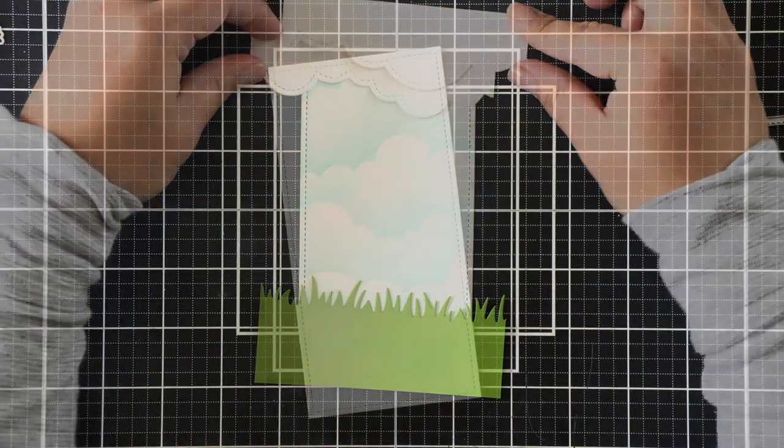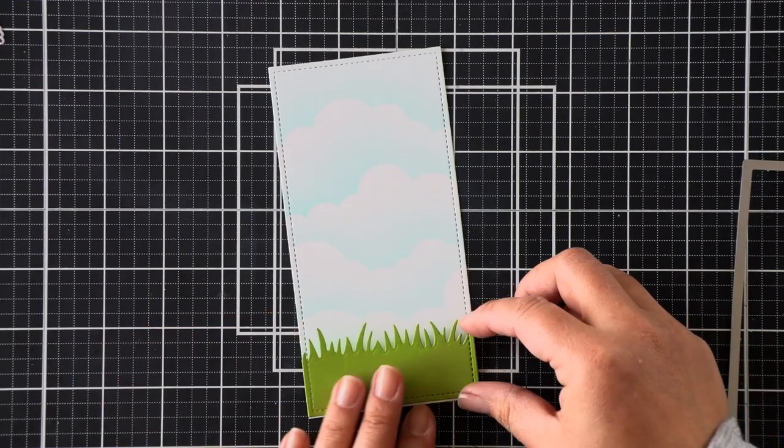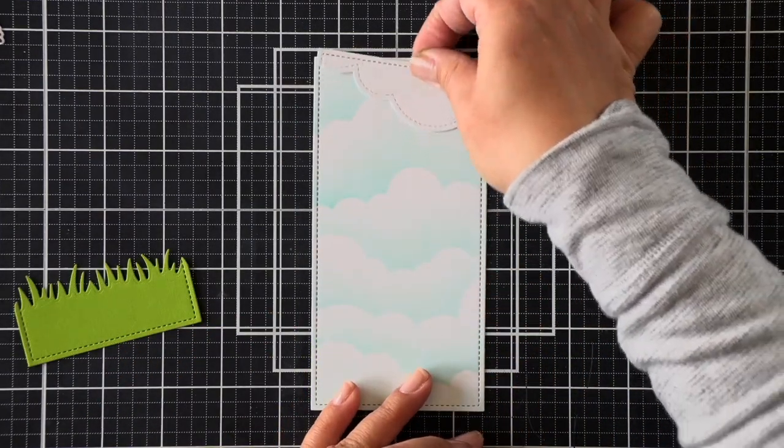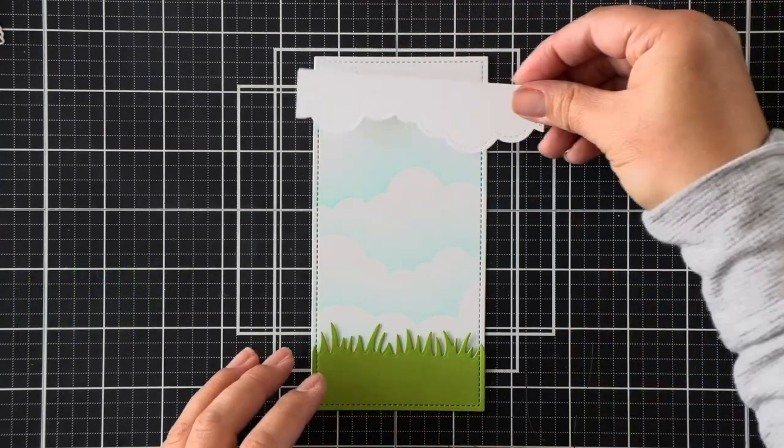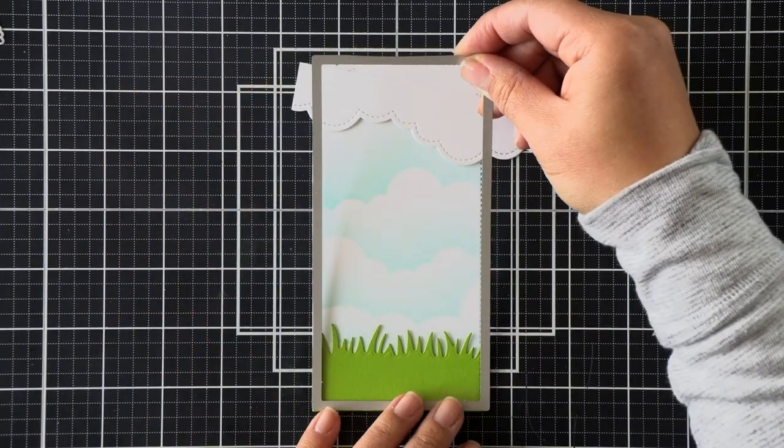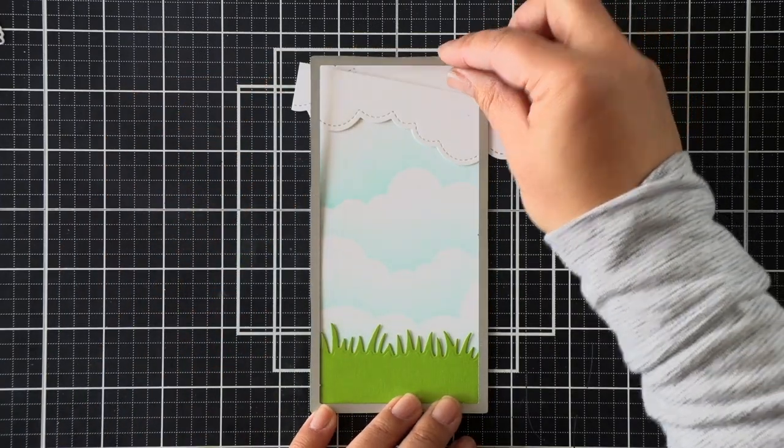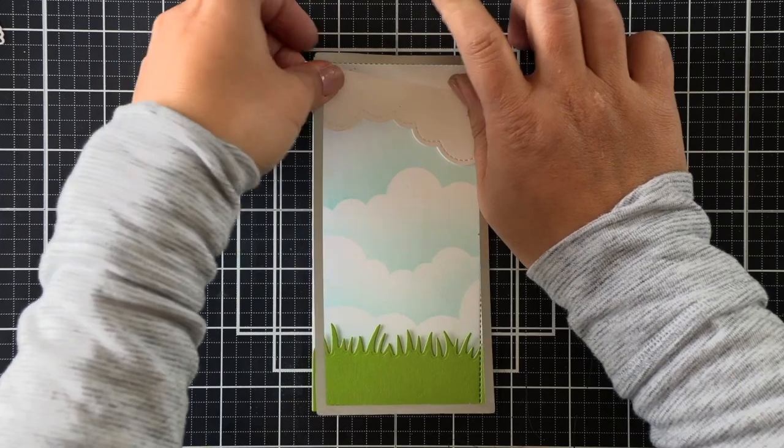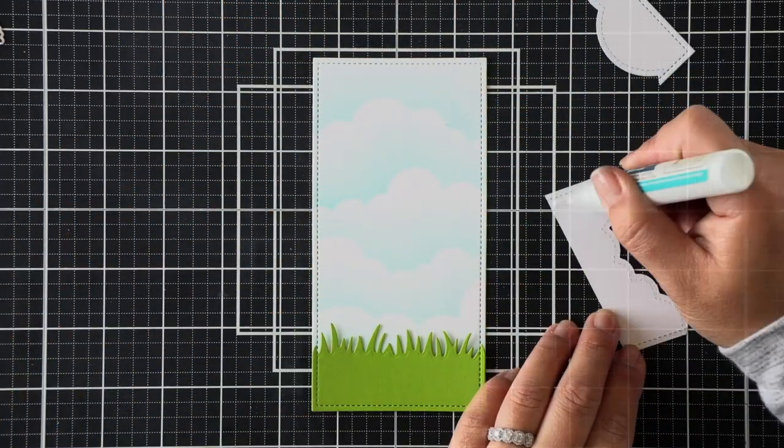I use the same large mini slimline stackables die to make a seamless stitching all the way around the card, and that just keeps our card more cohesive. Once I've die cut those stitched sides onto these panels, I'm just going to go ahead and attach them to my card.